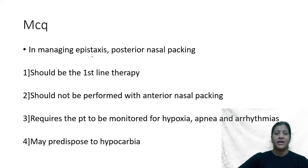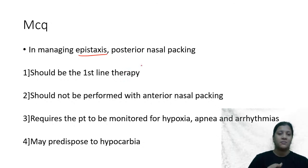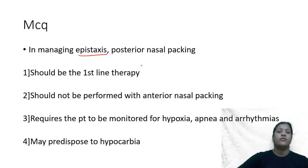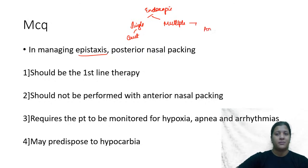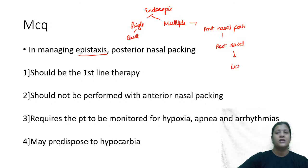Posterior nasal packing is not the first line of therapy. Management begins with Trotter's method — pinching the nose and bending forward. Then endoscopic examination is performed: if a single bleeding point is found, it is cauterized; if multiple bleeding points are found, anterior nasal packing is done. If anterior nasal packing fails, posterior nasal packing is performed, and if that fails, arterial ligation is done.